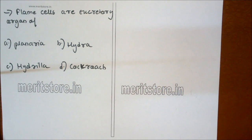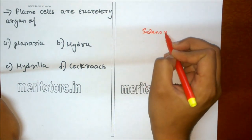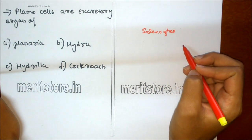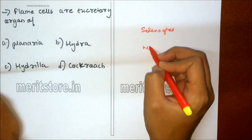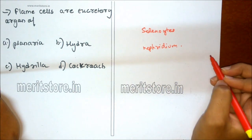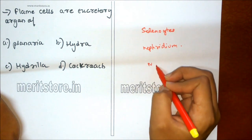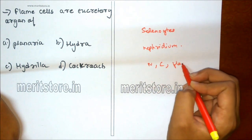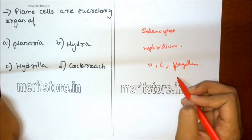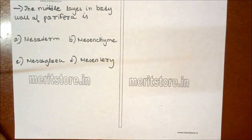Flame cells are the excretory organs of: A Planaria, B Hydra, C Hydrilla, D cockroach. Solenocytes are flame cell structures attached within the body of the nephridium of Platyhelminthes, which includes Planaria. Each cell has a nucleus, cytoplasm, and a long flagellum for locomotion that runs through the tubules. Option A is the correct answer.